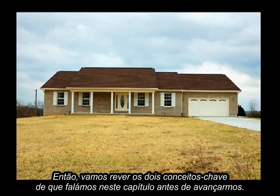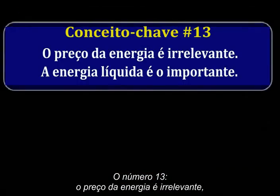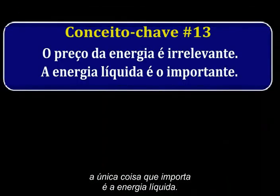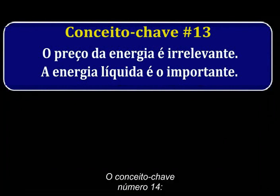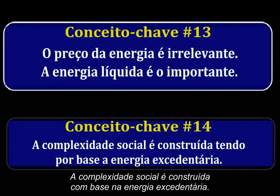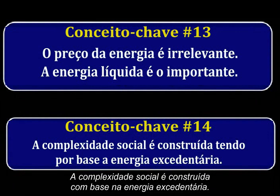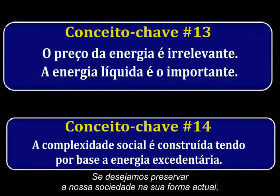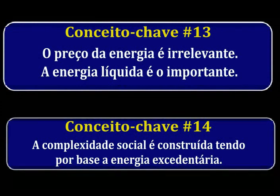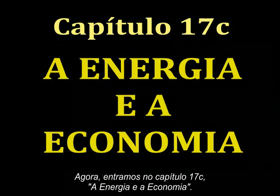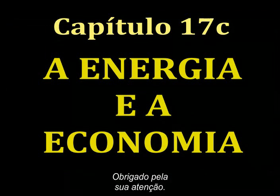So let's review the two key concepts so far before moving on. Number 13: the price of energy is irrelevant — net energy is everything. On this basis, both corn-based ethanol and hydrogen are dismal failures. Key concept number 14: social complexity is built upon surplus energy. If we want to maintain our society in its current form, we're going to have to master this concept and fast. On to Chapter 17C: Energy and the Economy. Thank you for listening.